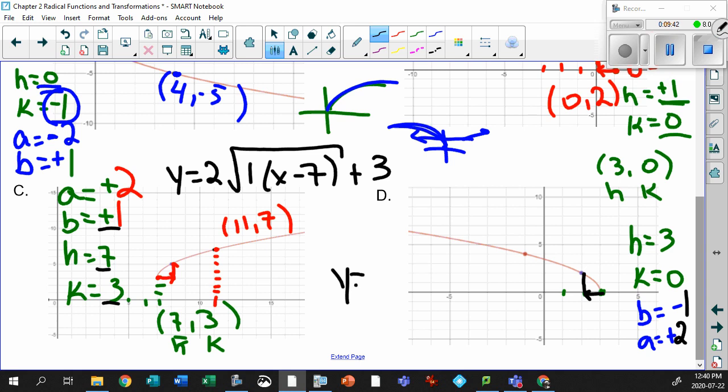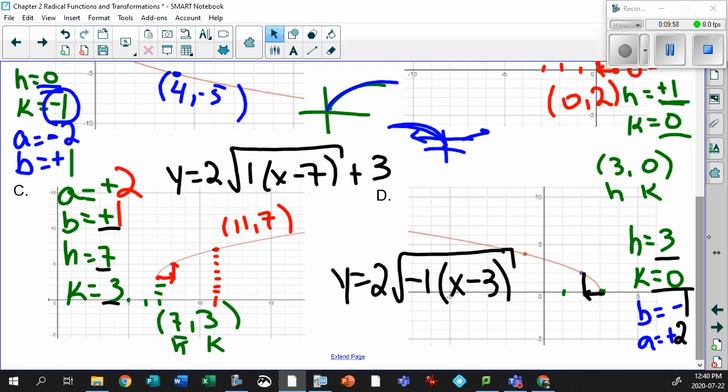y equals 2. My a being 2 again. Square root. My b is going to be negative 1. x minus my h is going to be 3. And my k is going to be, well, it's 0. I'm just going to leave it out. That should be the formula. Let's throw it in our calculator and find out.